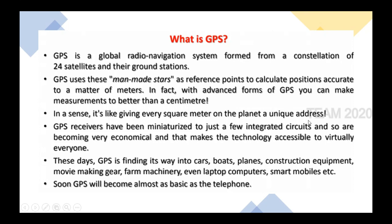For example, if you open Google Maps and click your own location, you will get the latitude and longitude of that location. You can check the nearest shop or shopping mall and get its location too. So you are giving every square meter on the planet a unique address to identify its location. GPS receivers have been miniaturized to just a few integrated circuits and are becoming very economical, making the technology accessible to virtually everyone. These days GPS is finding its way into cars, boats, planes, construction equipment, movie making gear, farm machinery, even laptop computers and smart mobiles.